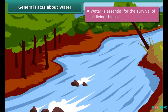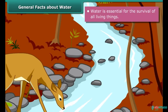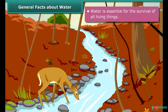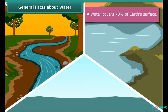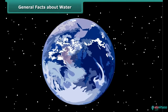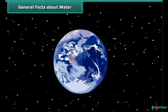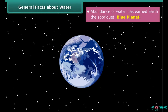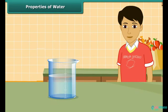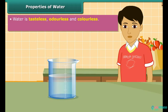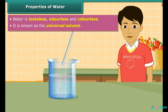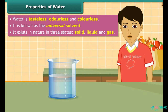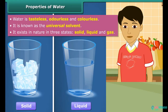Water is essential for the survival of all living things — plants, animals, human beings and other life forms. It covers 70% of our planet in the form of rivers, ponds, oceans and streams, making earth appear blue in color when seen from space. In fact, the abundance of water has earned earth the sobriquet 'blue planet'. Water is tasteless, odorless and colorless. It dissolves many substances, so it is known as the universal solvent.